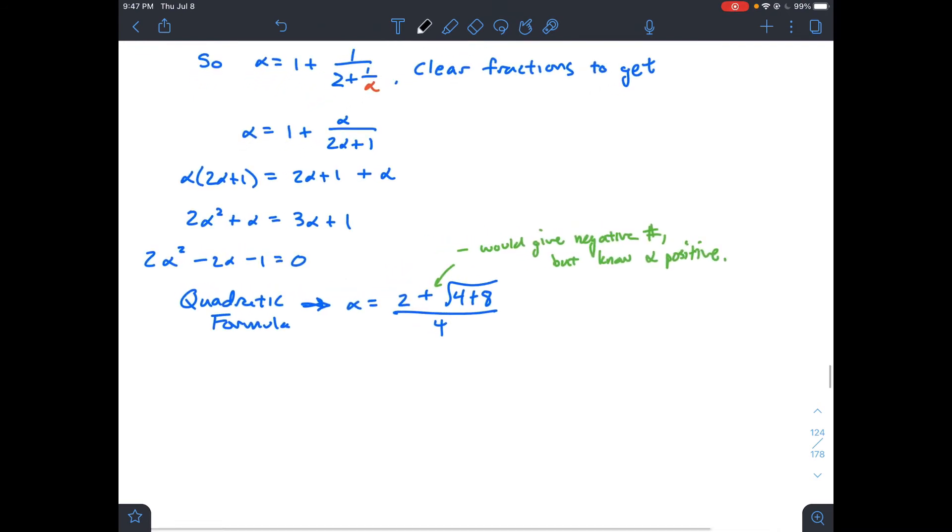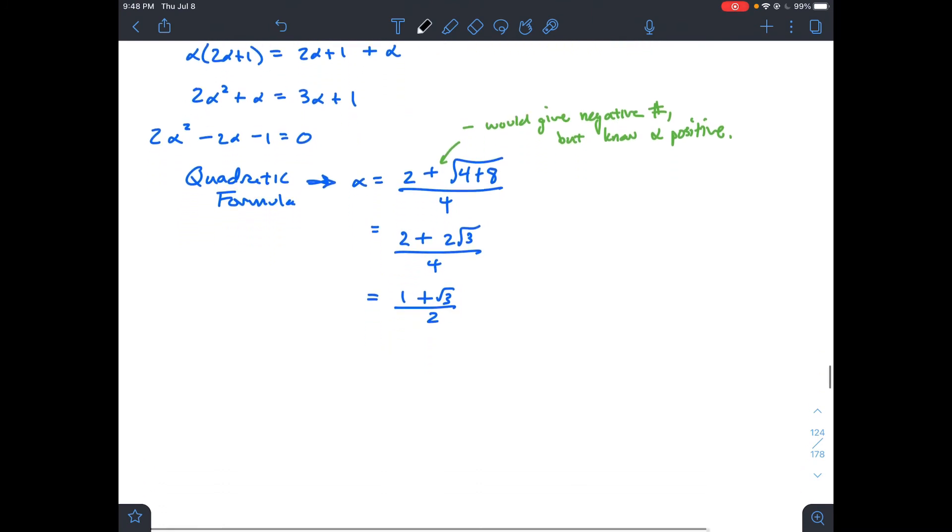Notice I know that alpha is this continued fraction of 1, 2 repeated, so this is not a negative number. I know that for sure. When I think about the quadratic formula, I don't want the plus or minus. Technically there are two possibilities for alpha, but it's really just one because I know alpha has to be positive. I just want the plus there.